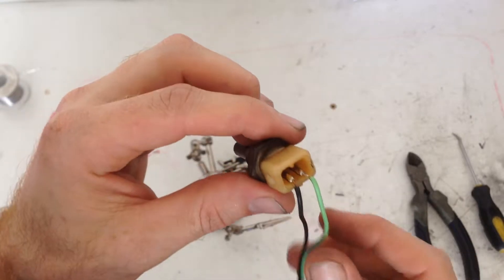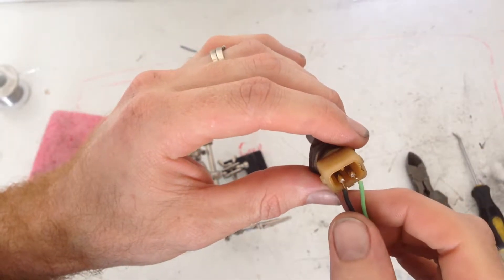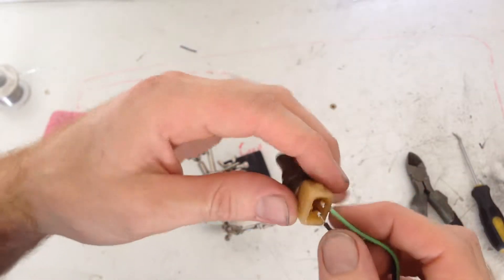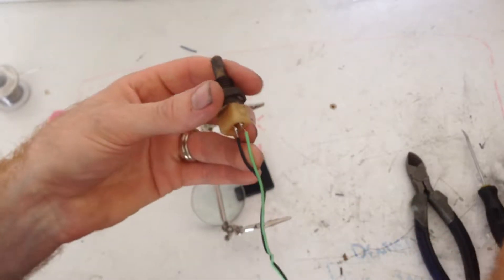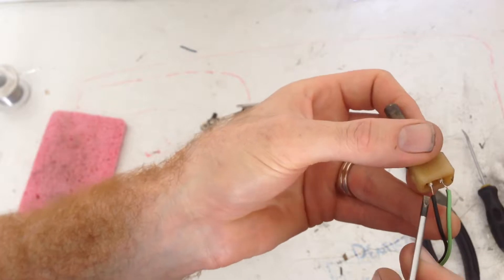Alright. There's the wires on our sensor. Alright. So what I'm going to do now is fill it up with hot melt glue so they can't come unattached and also to make it waterproof.